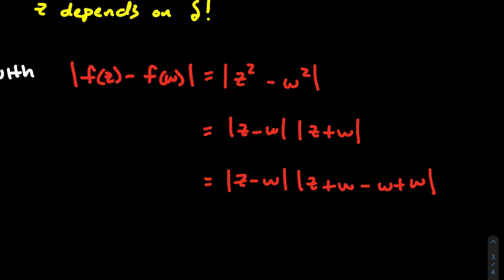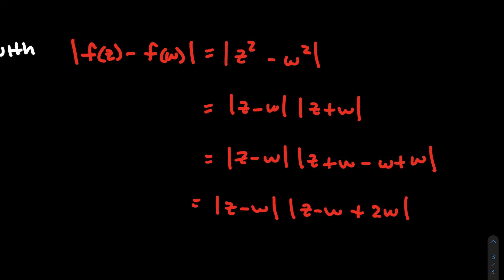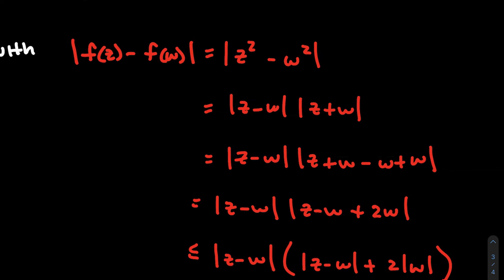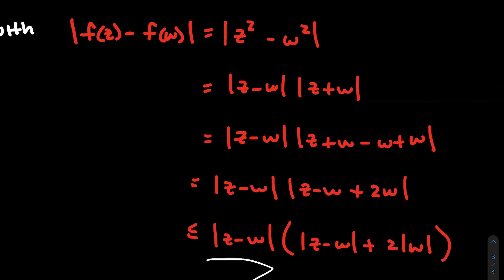I've rearranged the second absolute value term so I can apply the triangle inequality: |Z - W + 2W| ≤ |Z - W| + |2W|. So now I have |F(Z) - F(W)| ≤ |Z - W| · (|Z - W| + 2|W|). The key point is that the right-hand side, after I substitute |Z - W| < delta, will only depend on delta and W — no Z at all. That's exactly what I want.